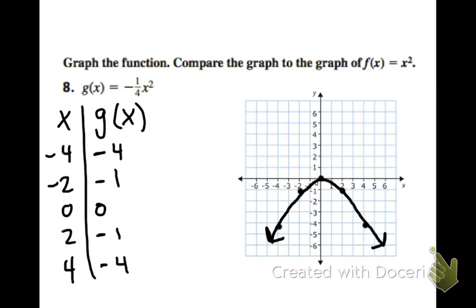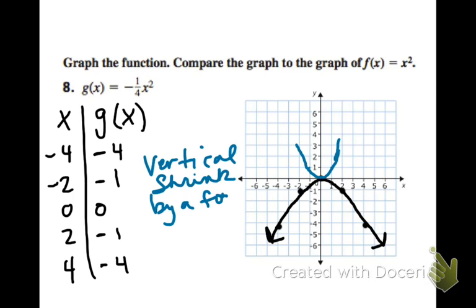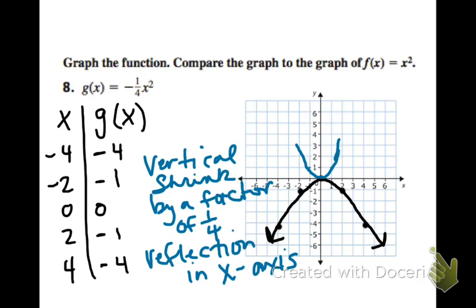Compared to the parent function, right? You can always kind of draw your parent function a little bit. It's right up here. So compared to my parent function, it's going to be wider. It's wider than the parent function. So then I know it's going to be a vertical shrink by a factor of 1 fourth. And it is also a reflection, because it is opening down and the parent function opens up in the x axis. And that's how I would compare it to the parent function.